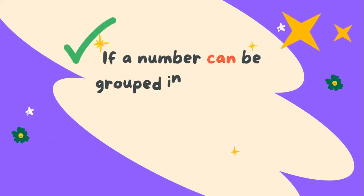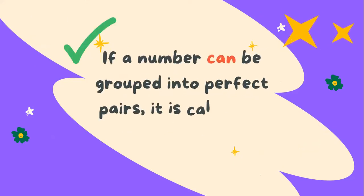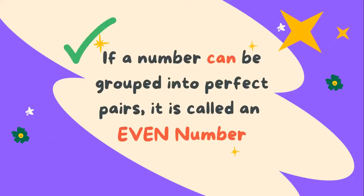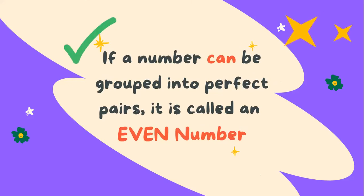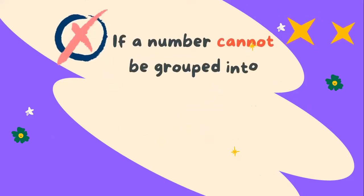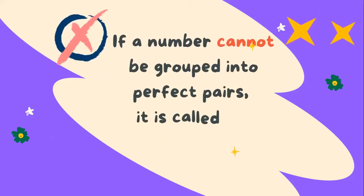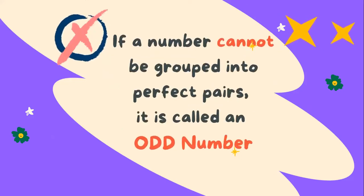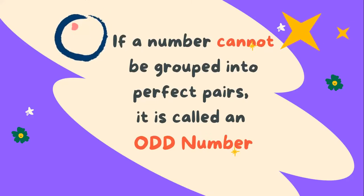If a number can be grouped into perfect pairs, it is called an even number. And if a number cannot be grouped into perfect pairs, then it is called an odd number.